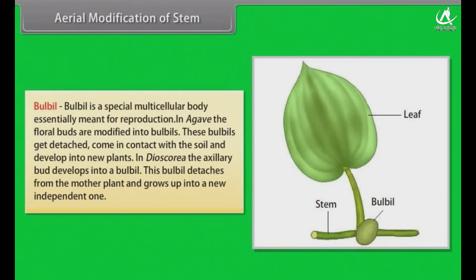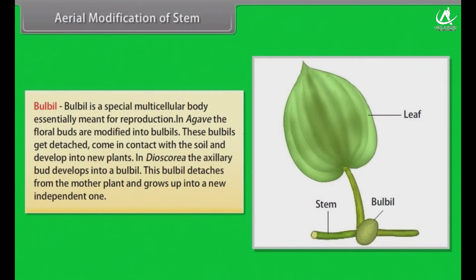A bulbil is a special multicellular body essentially meant for reproduction. In Agave, the floral buds are modified into bulbils. These bulbils get detached, come in contact with the soil, and develop into new plants. In Dioscorea, the axillary bud develops into a bulbil, which detaches from the mother plant and grows into a new independent one.